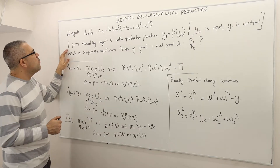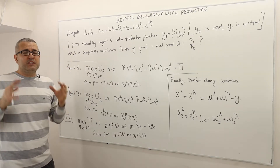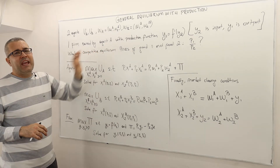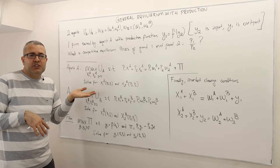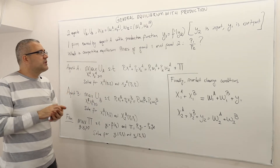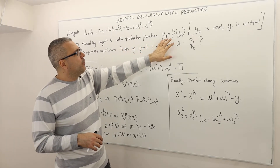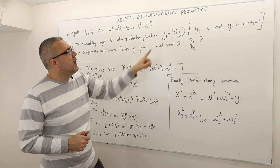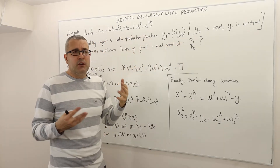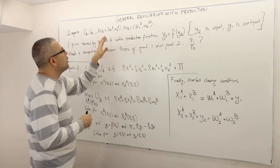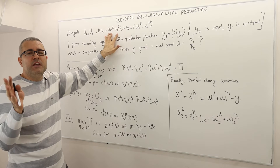So they bring some apples and bananas. The third agent in this economy is the firm, which is the supply side. This is a closed economy — the firm is owned by agent A. The firm's production function is Y1 equals F of Y2: Y2 is the input, Y1 is the output. Good one is equal to smartphone and good two is labor, and there's only one input — labor — with no need for capital.